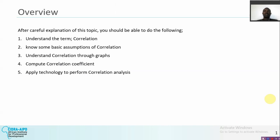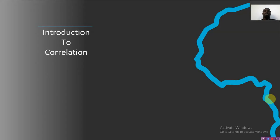During the course of this topic we must understand certain things. First, we must be able to understand the term correlation. Two, we must know some basic assumptions of correlation. Three, we must understand correlation through graphs. Four, we must be able to compute correlation coefficients. And lastly, we must be able to apply technology to perform correlation analysis.